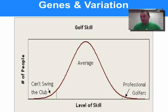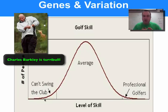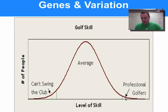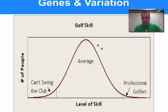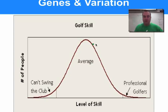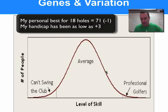To illustrate a normal distribution, consider golfers. Some are so terrible they can barely swing the club, and on the other end, some are so ridiculously good they get paid to play — like Tiger Woods or Phil Mickelson — but there aren't very many of those. Most golfers are just average, shooting around 100. The average golfer has about a 16 or 17 handicap, which means they just barely break 100.